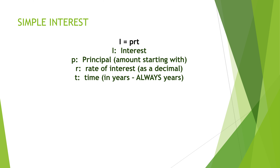I equals Principal times Rate times Time — we used to tell the kids: I equals PERT. I is the interest, P is the principal — that's how much money you're starting with. For years I spelled it P-L-E, because I learned 'the principal is my pal,' and while that's the correct spelling for a school principal, it is also the correct spelling when it comes to money. R is the rate of interest, always expressed as a decimal, and T is the time, always in years.